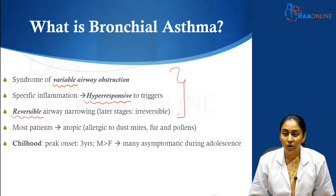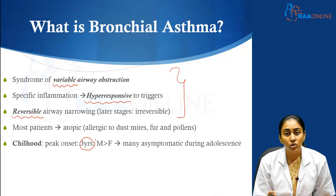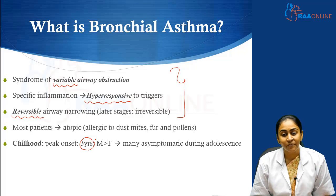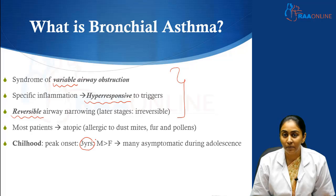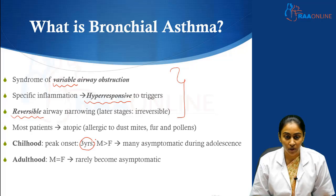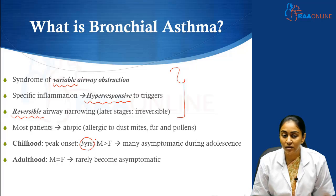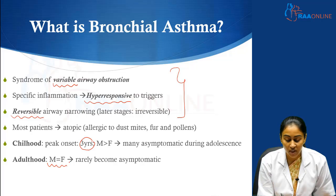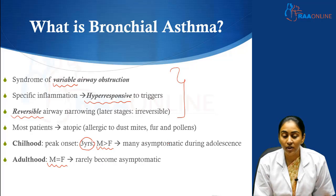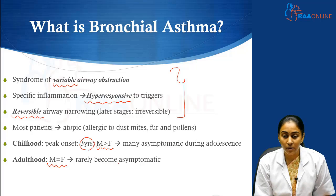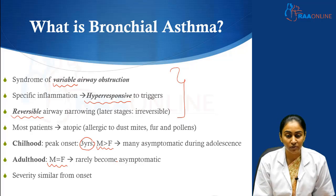When there is onset of bronchial asthma in childhood, the peak onset is around three years of age, there is a slight male preponderance, and most of these patients may end up being asymptomatic as they approach adulthood. However, with adult onset bronchial asthma, there is no gender preference, and unlike childhood onset asthmatics who can become asymptomatic, in adult onset asthma they rarely become asymptomatic and the severity is usually similar from onset.